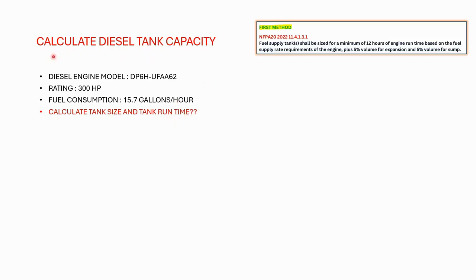Let's take an example to determine the tank size and tank run time using the first method. We first need to know the fuel consumption the engine uses per hour. In our case, we are considering 15.7 gallons per hour based on the manufacturer data sheet for the selected engine model. We also have the engine power for this example.